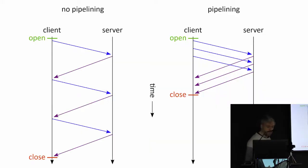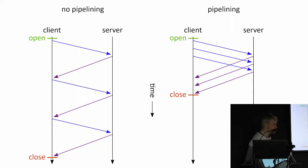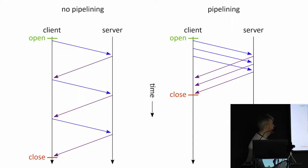HTTP 1.1 also allowed for something called pipelining, in which there was no requirement for the client to wait for the response of a previous request before sending a new one. So instead of sending one request, waiting for a response, then sending another, you could just send all the requests over the line and get responses as soon as the server was able to process them. This pipelining had some problems, though.